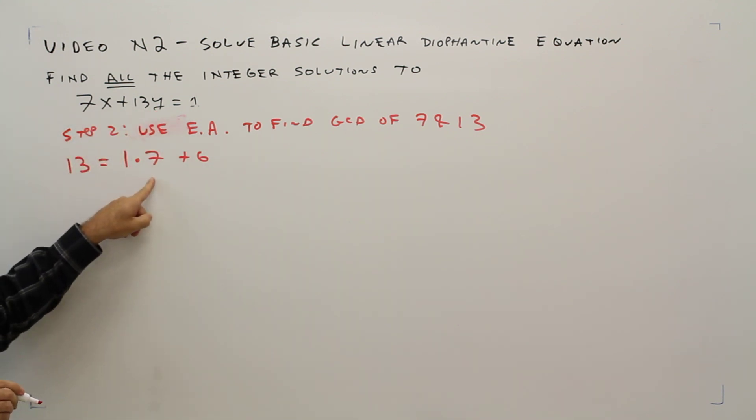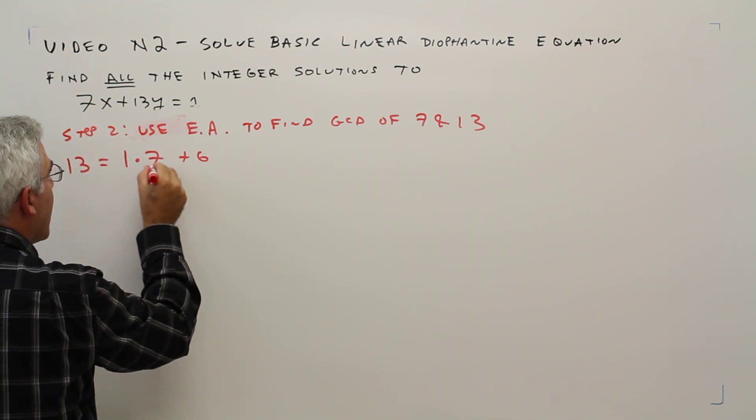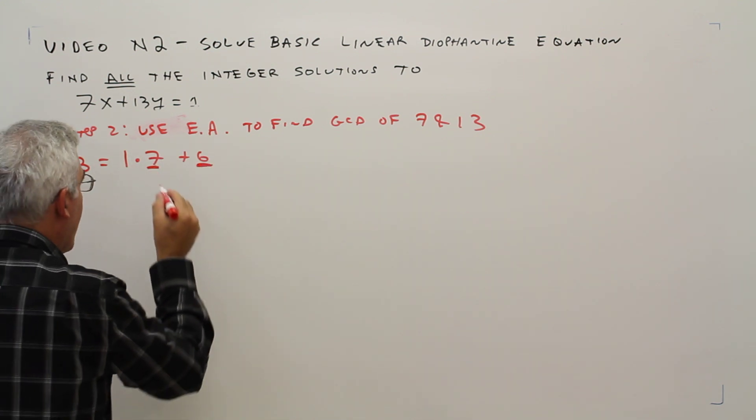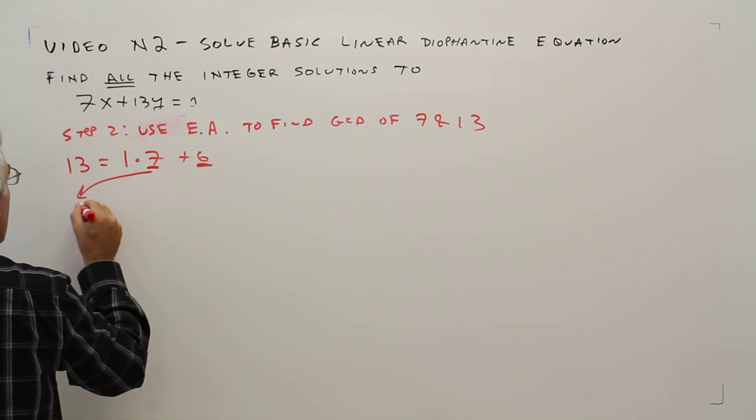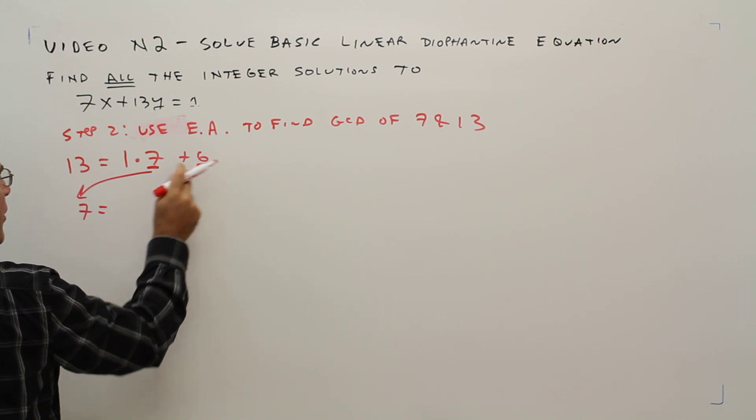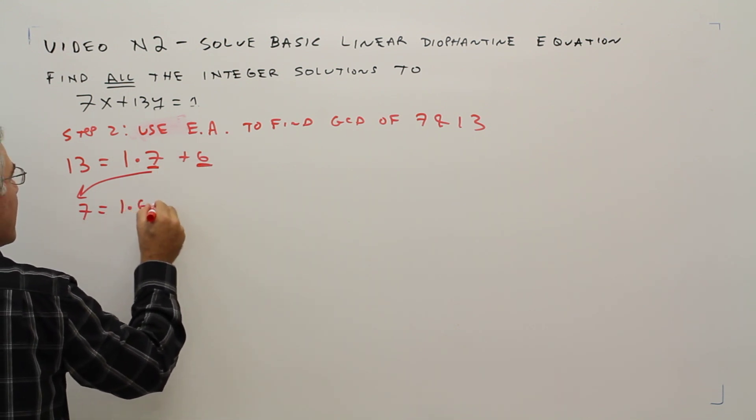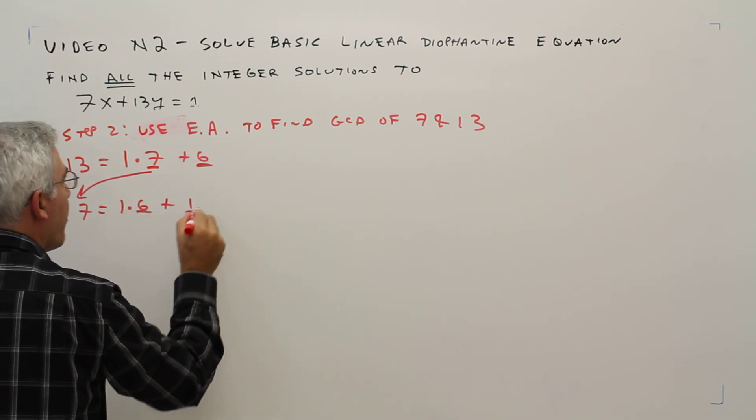Okay, I'm putting the 7 and the 13 in there. Then, remember before, I underlined those. 7 equals 1 times 6 plus 1.